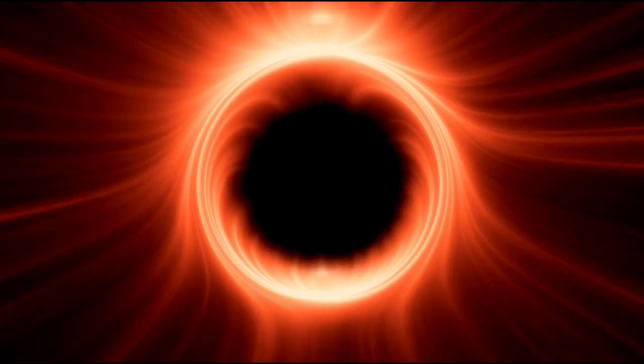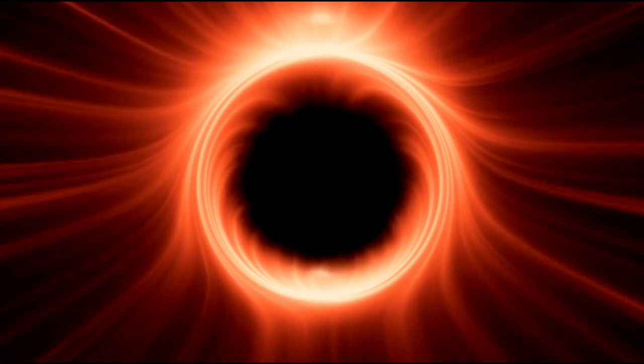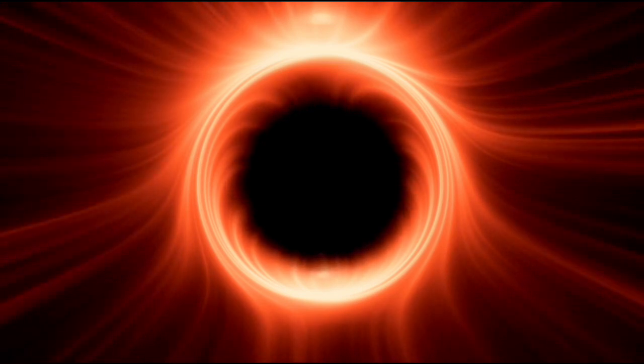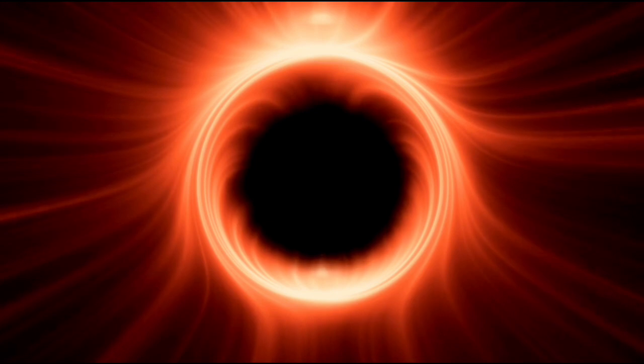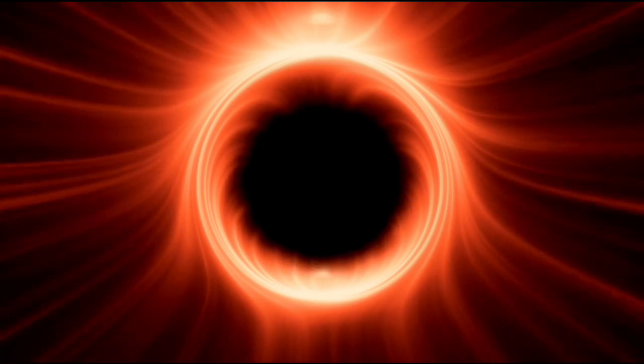Moving inward, the photon sphere constitutes the second layer, where light orbits the black hole in perpetual captivity. Any photons that venture into this realm succumb to the overwhelming gravitational pull, trapped forever within the black hole's cosmic embrace.